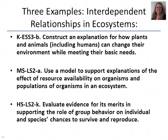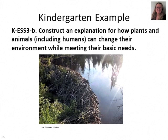I want to look at three examples, all from the interdependent relationships and ecosystems strand. The first is the kindergarten one just mentioned. The second is from middle school, using a model to support explanations of the effect of resource availability on organisms and populations in an ecosystem. The third is high school: evaluate evidence for its merits in supporting the role of group behavior on individual and species chances to survive and reproduce.